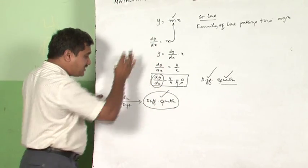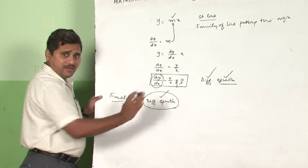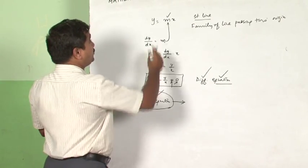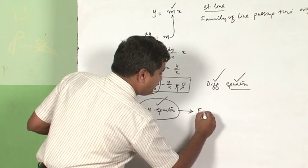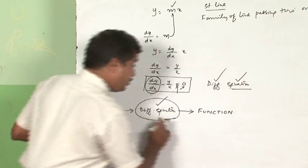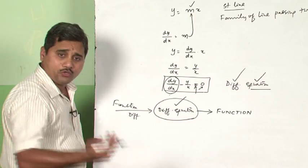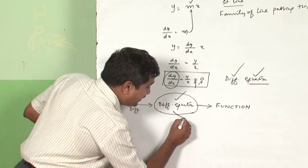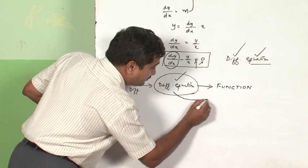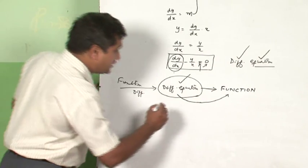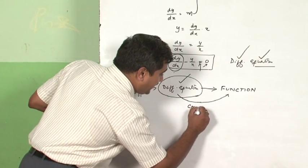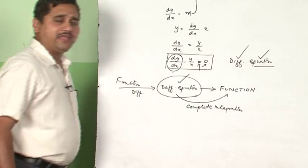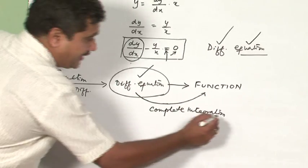This is how you obtain a differential equation — when a function is differentiated. Now, from a differential equation, suppose you want to go back to the original function. How do you go about it? The process is: from the differential equation, to get back to the function, you have to do a complete integration.